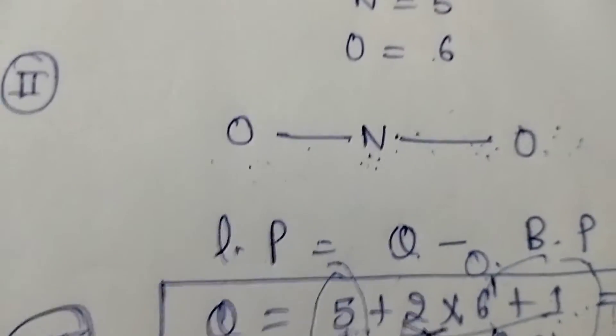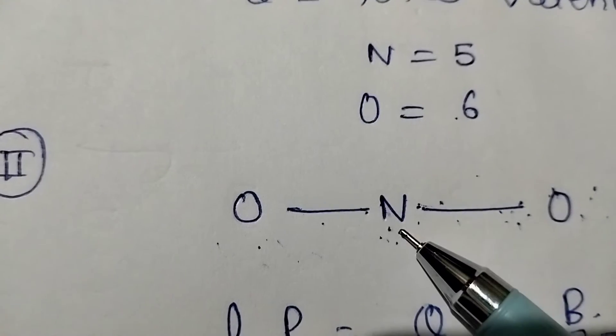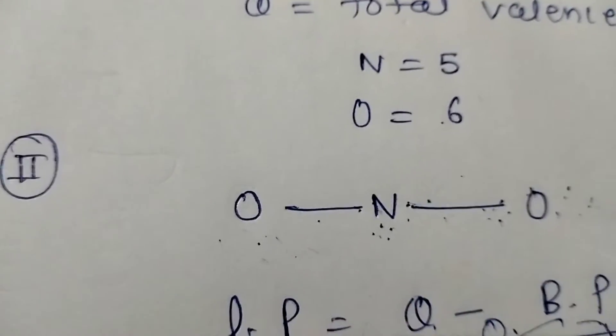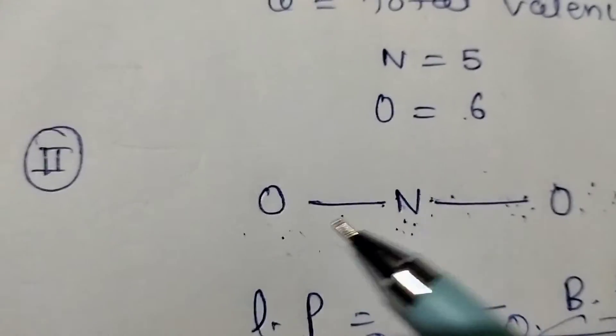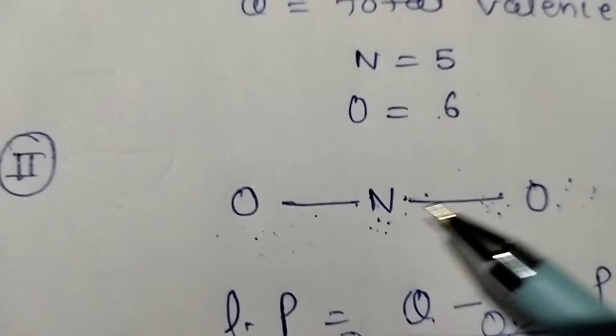So simply you will draw. Simply, nitrogen is a central atom. You will attach both oxygens. That means two bonds are attached in there.